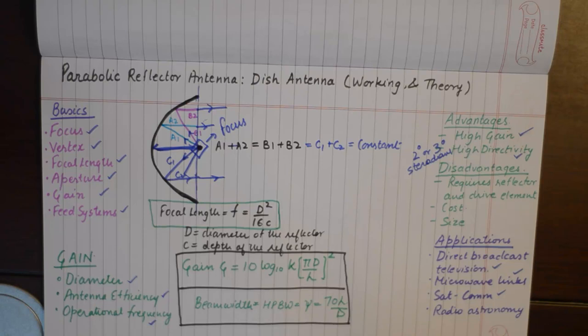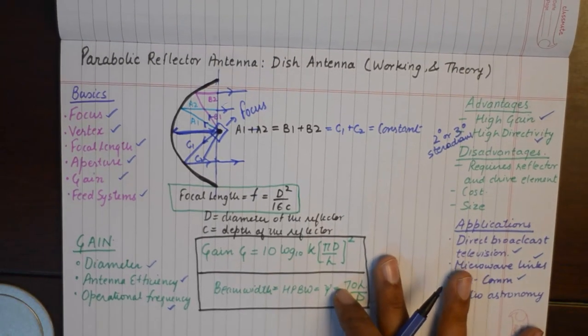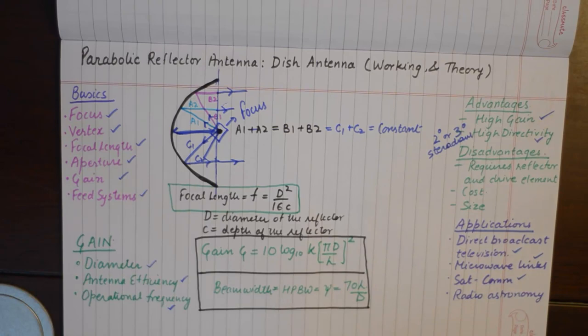Parabolic antennas perform well for bigger aperture antennas. If the diameter is high, if the diameter is bigger, then it will have a larger gain.